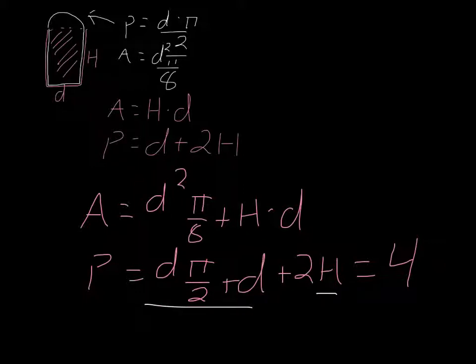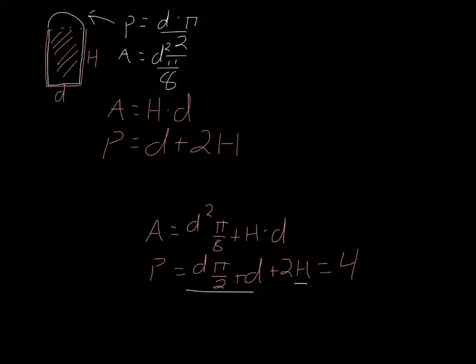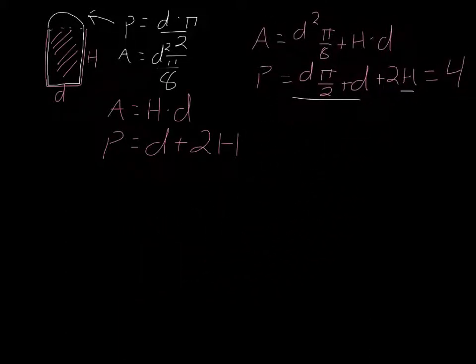by just rearranging using some basic algebra. So when you do that, you're going to come up with h = 2 - 1.29d. And so with this new equation of what h is equal to, we can plug that now into our original area equation.